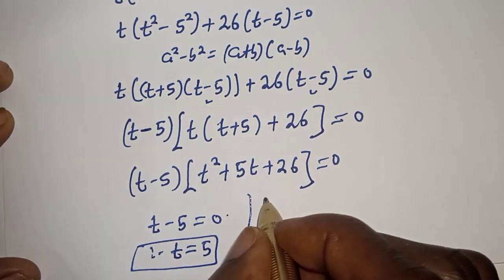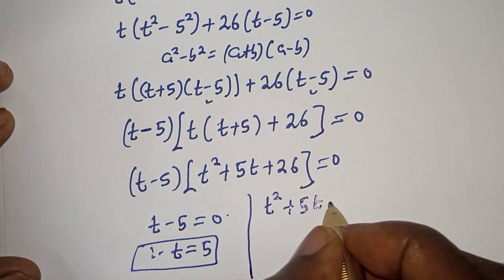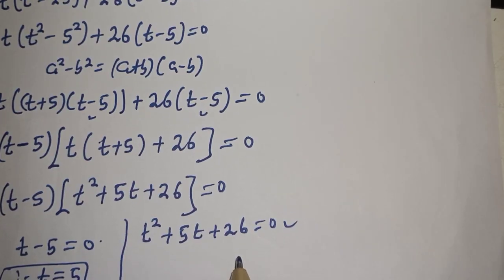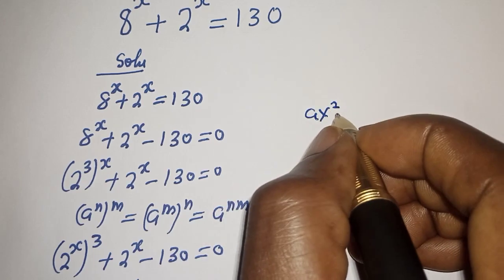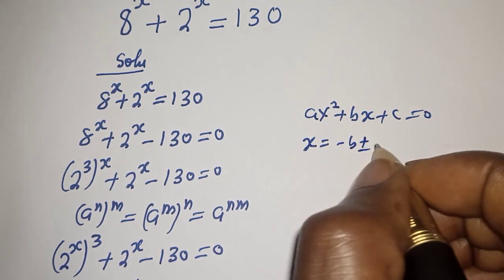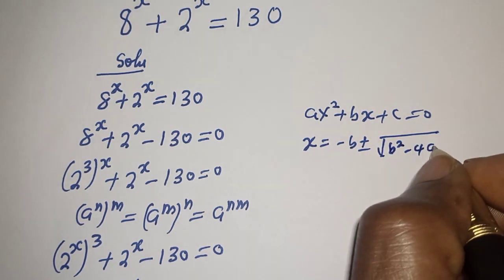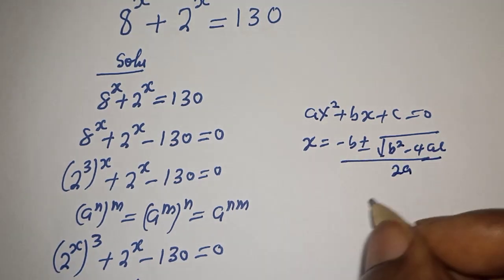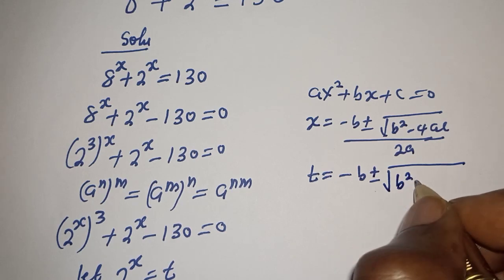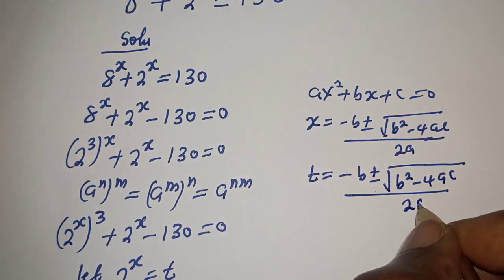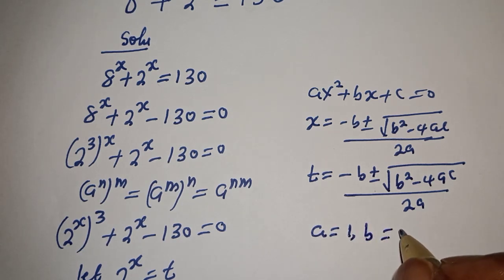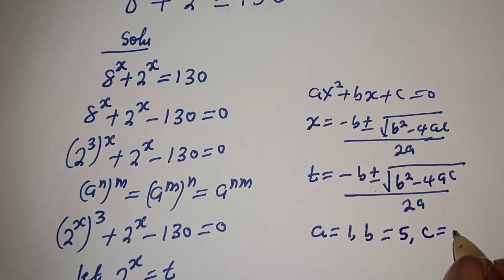For the second case: t squared plus 5t plus 26 equals 0. This is a quadratic equation solved using the quadratic formula. For as squared plus bs plus c equals 0, s equals minus b plus or minus square root of b squared minus 4ac, over 2a. Here t equals minus b plus or minus square root of b squared minus 4ac over 2a, where a equals 1, b equals 5, and c equals 26.